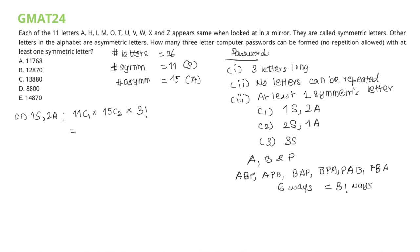Simplifying this expression, we have 11 times 15 times 14 over 2 times 3 factorial, which gives us 6930.